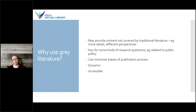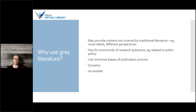Grey literature is often used in knowledge synthesis projects like systematic reviews or scoping reviews because it can minimize some of the biases inherent in the publication process. Those include things like lengthy publication timelines or certain kinds of research that aren't necessarily published — for example, it can be challenging to get null results published. If we looked at an intervention and found it did nothing, that might not end up in a traditional journal article, but you might find it in the grey literature. That's why it's highly recommended by systematic review guidelines to include grey literature in your search.